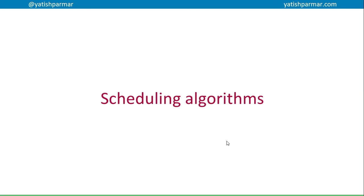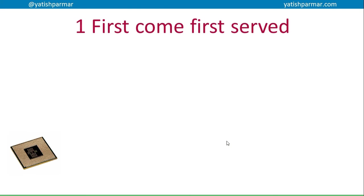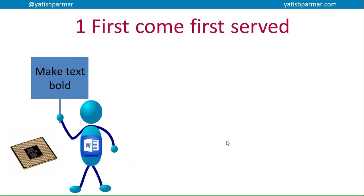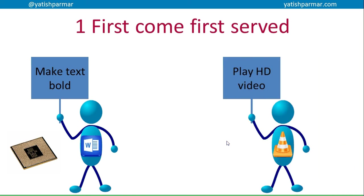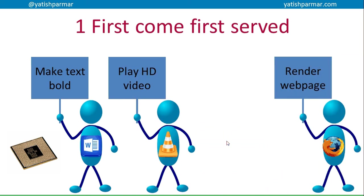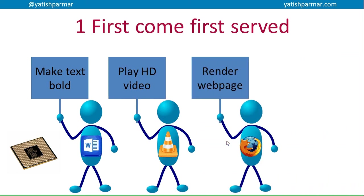Scheduling algorithms can be used to determine how much time a particular job or process is given. In a first come, first served system, you have your CPU sitting there waiting, and as jobs arrive in the ready queue they are processed in the order that they arrive.